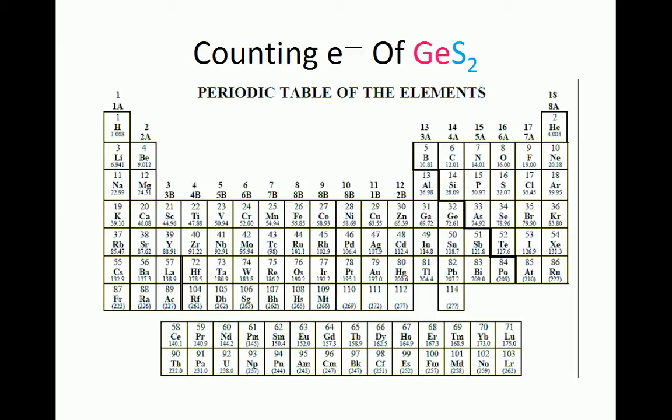First, we'll find germanium and sulfur in the periodic table and count the S and P electrons of all atoms in the molecule to get the number of electrons you have to draw the structure.